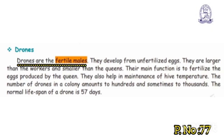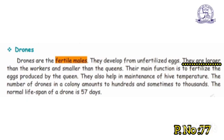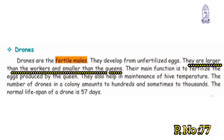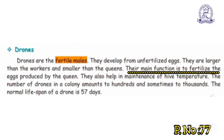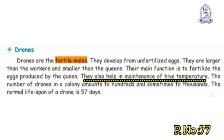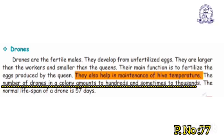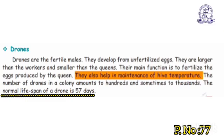Drones are the fertile males of the colony. They develop from unfertilized eggs. They are larger than worker bees but smaller than the queen. Their main function is to fertilize eggs produced by the queen. They also help in maintaining a high temperature in the hive. The number of drones in a colony can amount to hundreds, sometimes thousands. The normal lifespan of drones is 57 days.